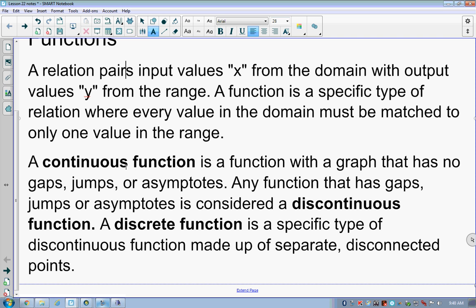So our vertical or horizontal line, sometimes they can be diagonal or just however they might be. But it's a function that doesn't have any of these gaps, jumps, or asymptotes. Any function that has gaps, jumps, or asymptotes is considered discontinuous, meaning that it's broken.